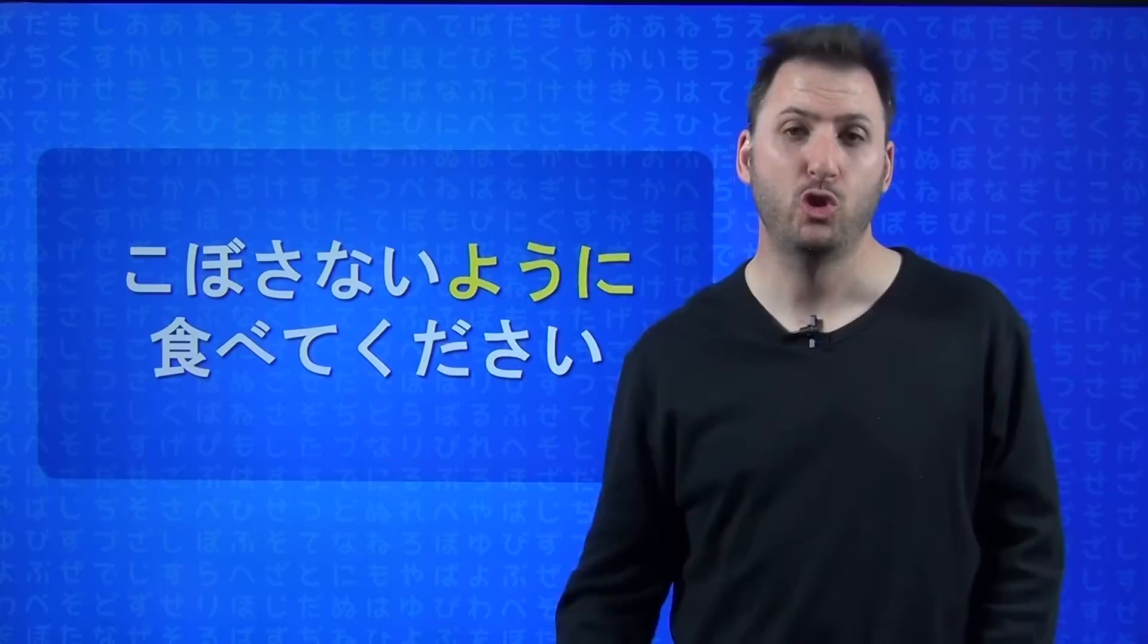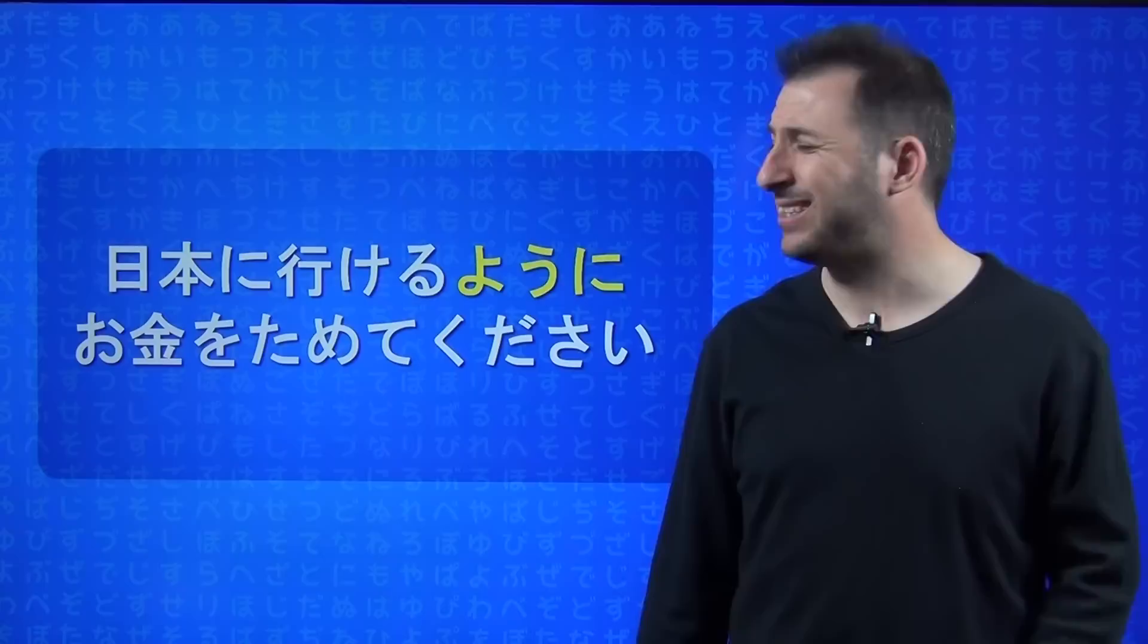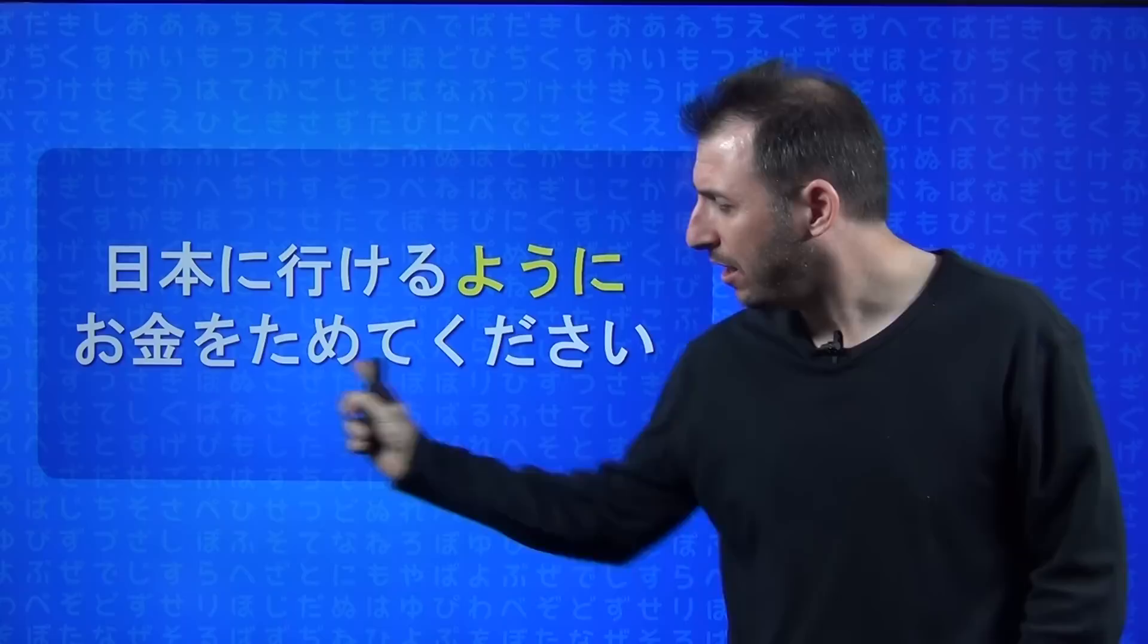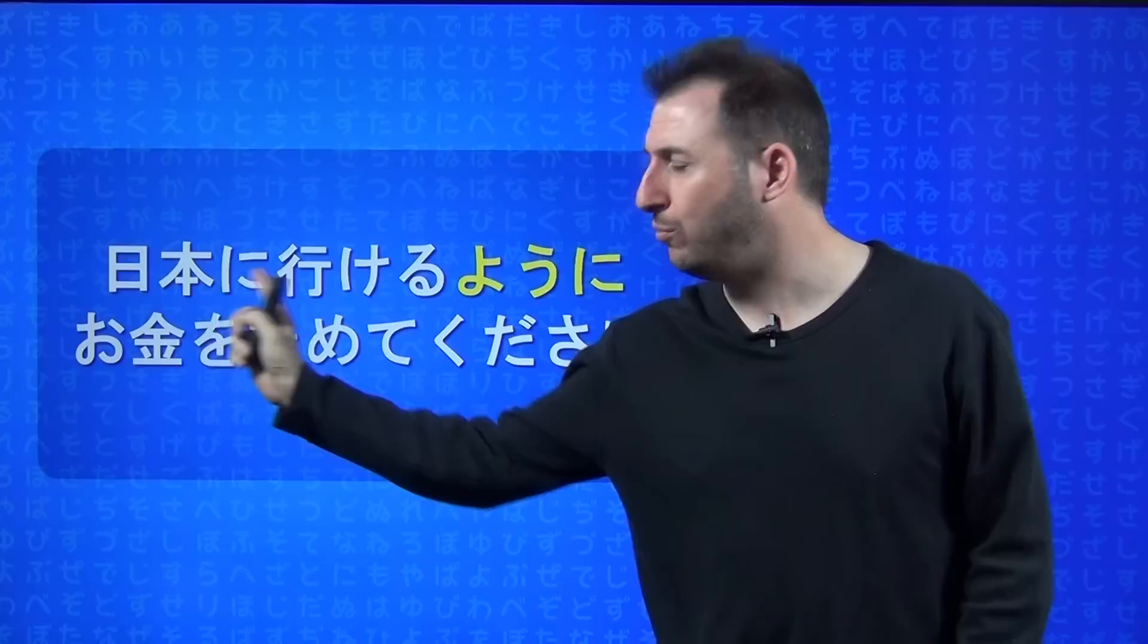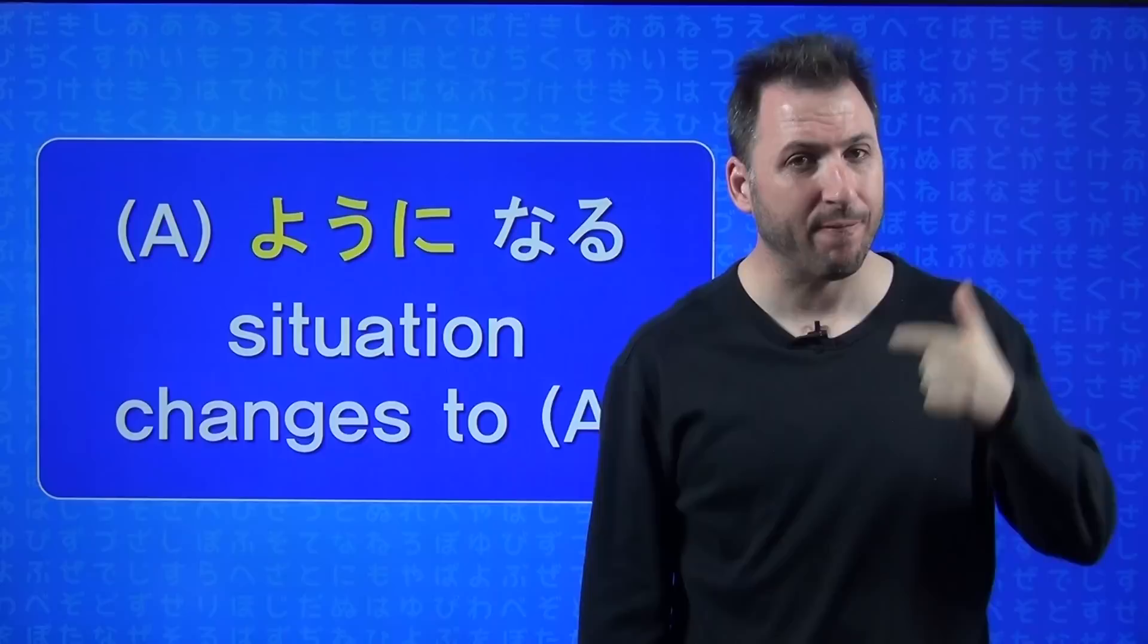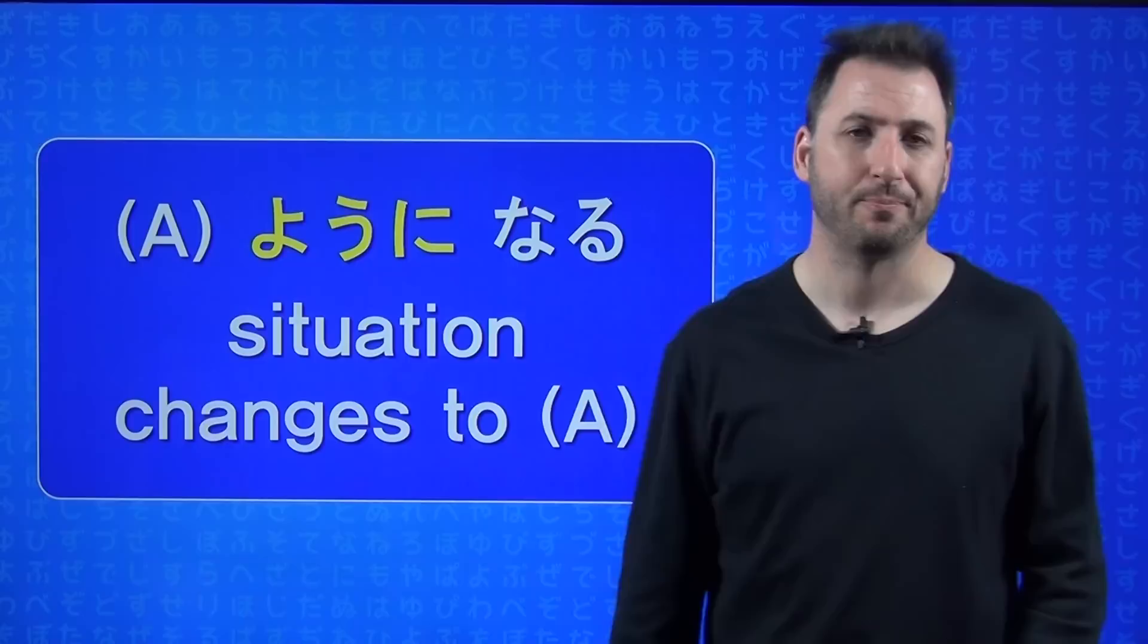Here's another one using tamete kudasai and using okane properly. Let's say you're saving up money so you can go to Japan. Nihon ni ikeru yō ni okane wo tamete kudasai. Someone says that to you: save money so that you can go to Japan. Now to make it even more complicated - up until now this has all been things that you do, but what if it's yō ni naru, which is very common? This is where you're saying the situation has changed to this. Let's look at an example.